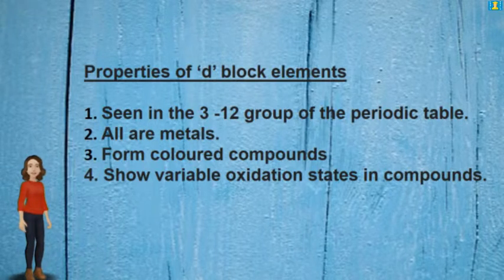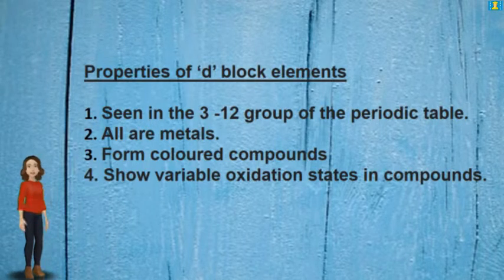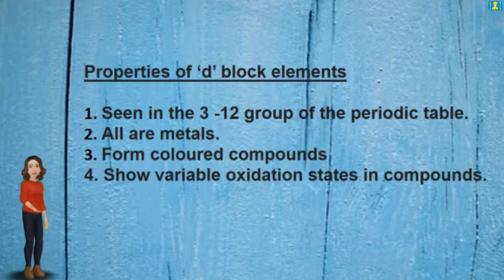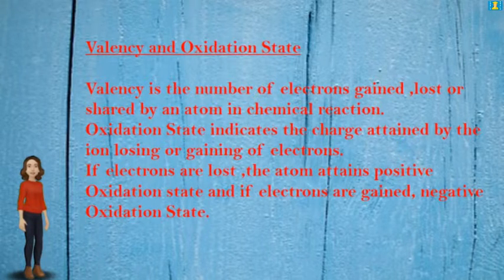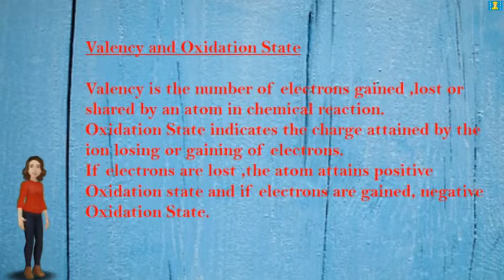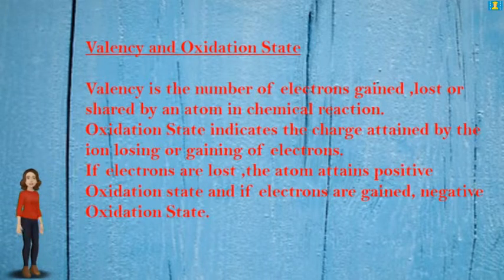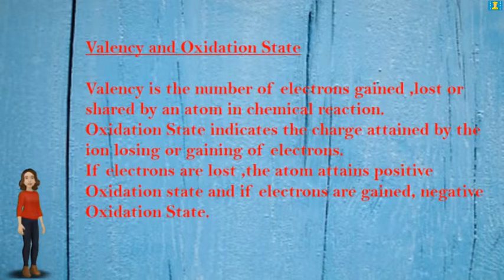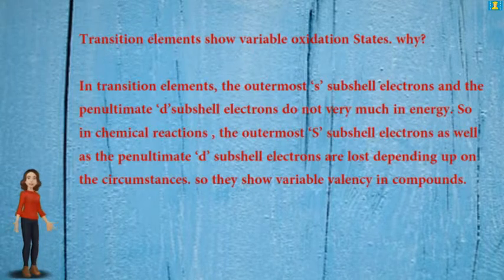Properties of D block elements: found in groups 3 to 12 of the periodic table, all are metals, form colored compounds, and show variable oxidation states. Valency is the number of electrons gained, lost, or shared by an atom in a chemical reaction. Oxidation state indicates the charge attained by an atom on losing or gaining electrons. If electrons are lost, the atom attains a positive oxidation state; if gained, a negative oxidation state.